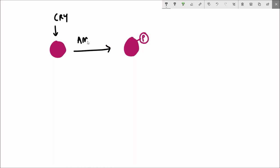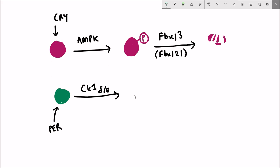Cryptochrome gets degraded when it is first phosphorylated by AMPK, which is a kinase protein. This addition of phosphate enables it to be recognized by FBXL3, which then triggers CRY for degradation.